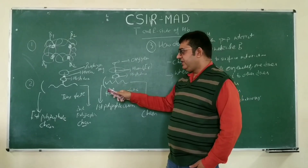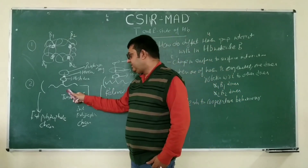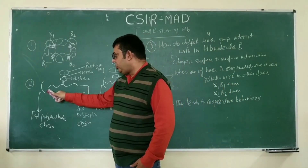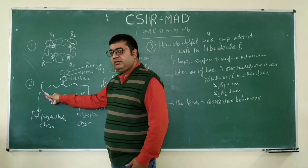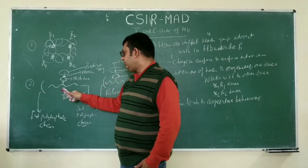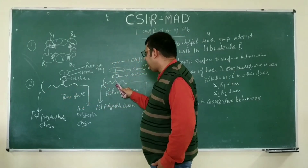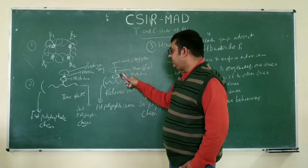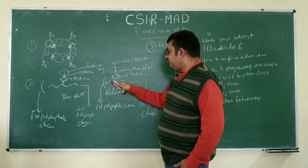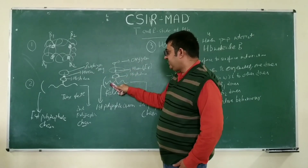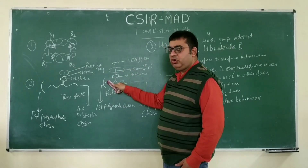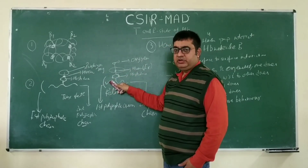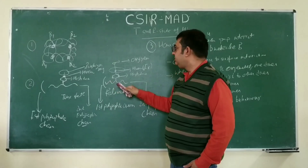Here we can see that this is polypeptide chain 2 and this is polypeptide chain 1. So when the oxygen binds to one of the polypeptide chains, there is a change in interaction, and these two polypeptide chains move closer to each other.